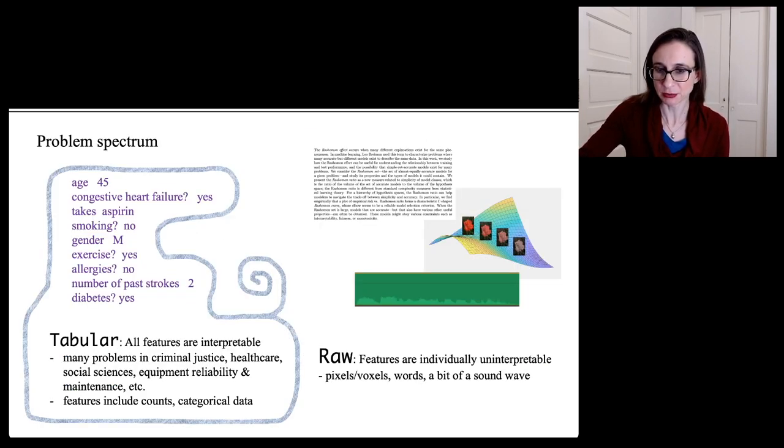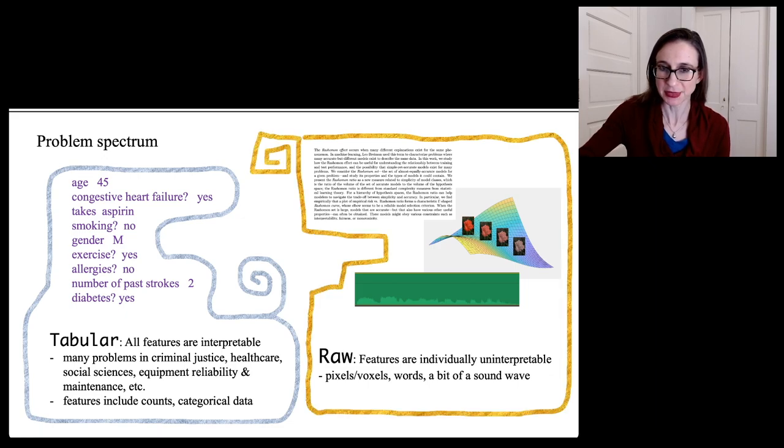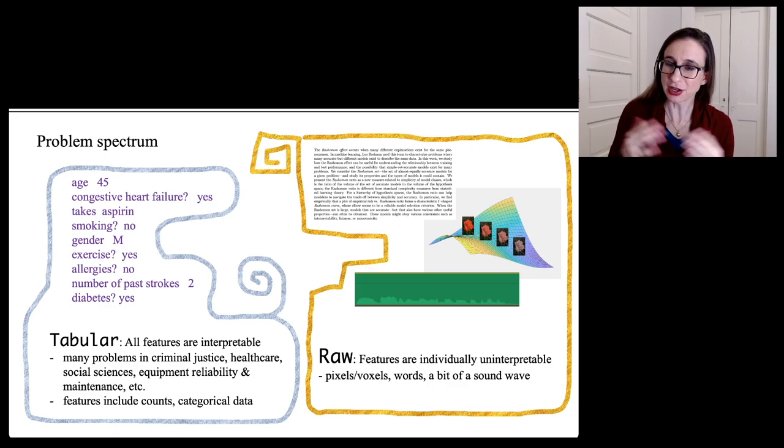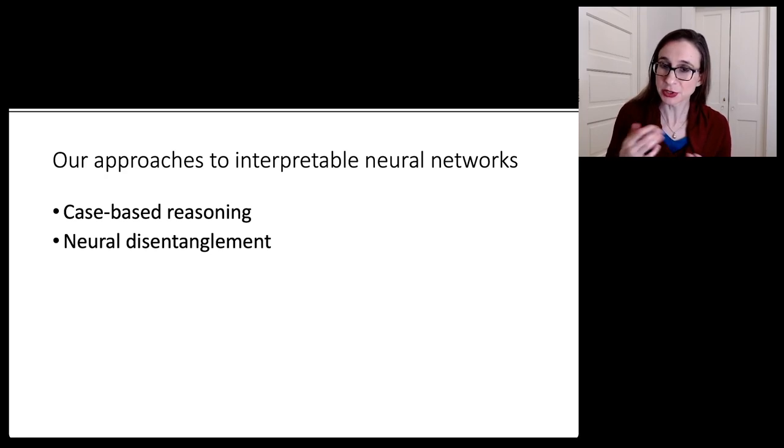So let's talk about raw data, too, because as I mentioned, there's no loss in accuracy when you want to build an interpretable model, even in the raw data case. But you have to be able to define interpretability carefully. So we've been designing some new approaches to interpretable neural networks that allow the user to understand the reasoning processes behind the predictions for these neural networks. And we have kind of two types of approaches. One is case-based reasoning and the other is neural disentanglement.